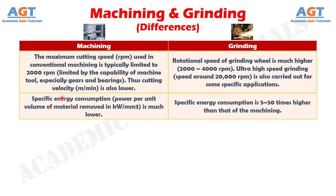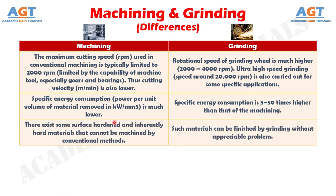Number 9: specific energy consumption — power per unit volume of material removed in kilowatts per cubic millimeter — is much lower in machining, whereas in grinding specific energy consumption is 5 to 50 times higher than that of machining. And difference number 10: there exist some surface hardened and inherently hard materials that cannot be machined by conventional methods, whereas such materials can be finished by grinding without appreciable problem.